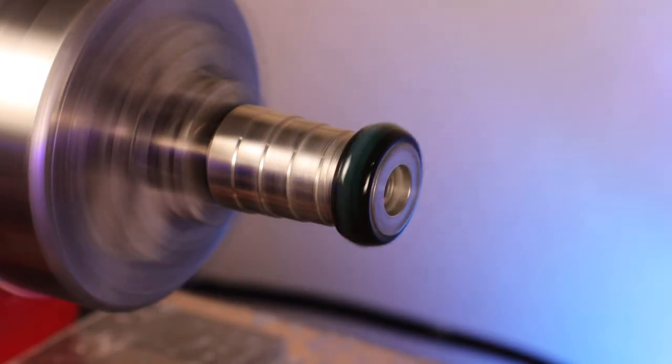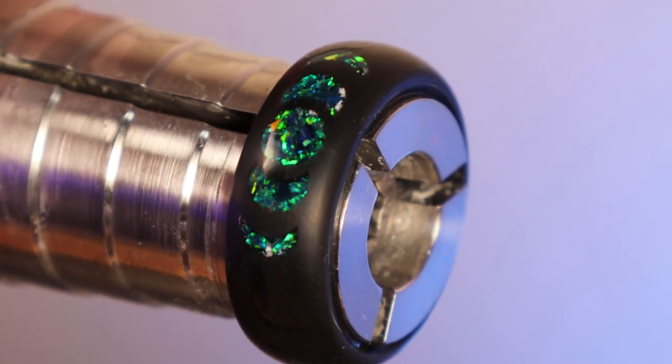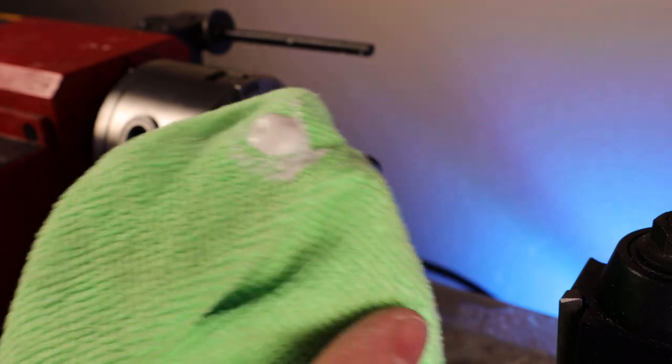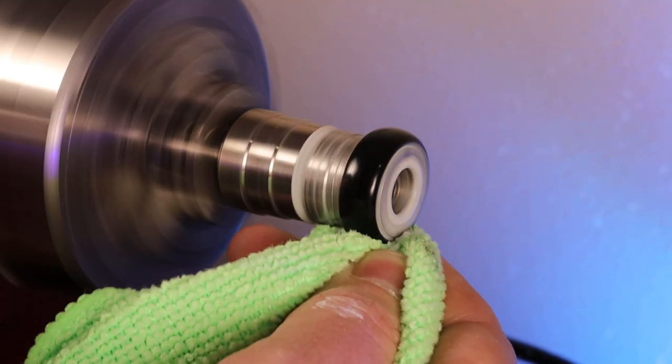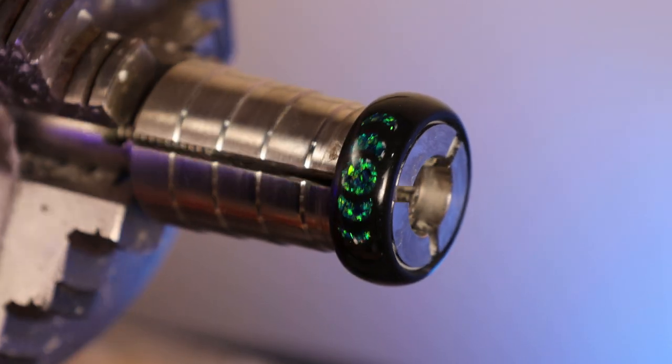Even going through all the sandpapers and the micro meshes, you're still going to have a kind of matte finish. And this is where some plastic polish is going to come in really handy. All I'm going to do is put a little bit onto a microfiber cloth and touch it to the ring as it's spinning. And after about a minute or so, you'll have a nice high polish.